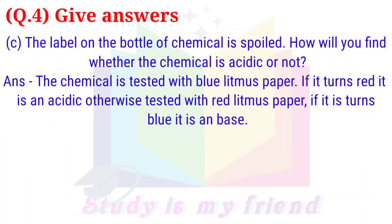C. The label on the bottle of chemical is spoiled. How will you find whether the chemical is acidic or not? Answer: The chemical is tested with blue litmus paper. If it turns red, it is an acid. Otherwise, test with red litmus paper. If it turns blue, it is a base.